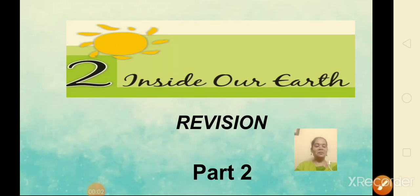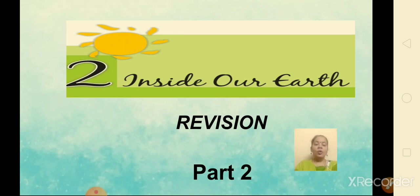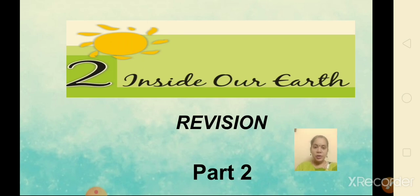Good morning children, Sai Ram. Welcome to part 2 of our revision lecture of Geography Chapter 2, that is Inside Our Earth. In the last session we learnt about the Earth's interior. We learnt that the interior of the Earth is made up of three layers: crust, mantle and core. We also saw the layers through a diagram. Now, in today's session we are going to revise rocks and minerals and also the rock cycle.